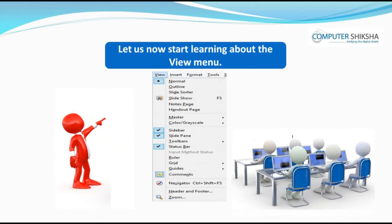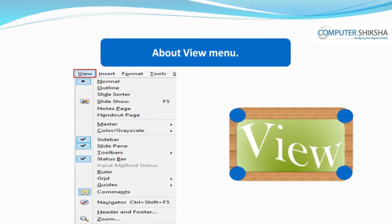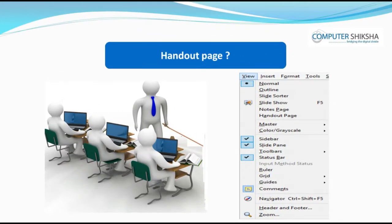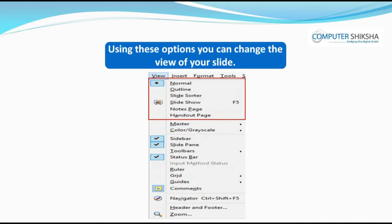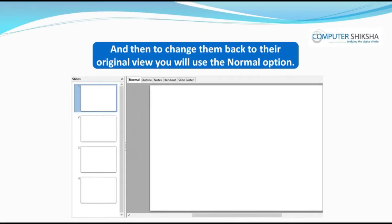Let us now start learning about the view menu. You can use the options of the view menu to hide or show options on your impress page. Do you know what happens with normal, outline, slide sorter, handout page and note page? Using these options, you can change the view of your slide. With these, you can see your slides in different views, and then to change them back to their original view, you will use the normal option.